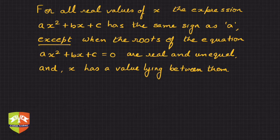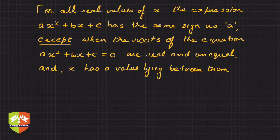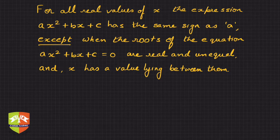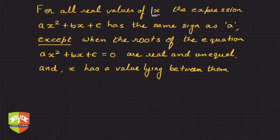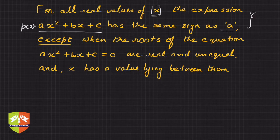Welcome to this session on quadratic equations. Here is a statement that looks dangerous but is easy to understand once explained. It says: for all real values of x, the expression ax² + bx + c has the same sign as a. Let's concentrate on this part — they're saying for all real values of x, the expression ax² + bx + c has the same sign as a.